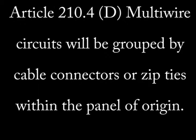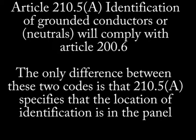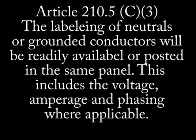Section 210.4 paragraph D: multi-wire circuits will be grouped by cable or zip ties within the panel. Article 210.5 paragraph A: identification of grounded conductors or neutrals will comply with Article 200.6 — we're going back to the color code for neutrals. Article 210.5 paragraph C, subsection 3: the labeling of grounded conductors will be readily available or permanently posted in the same panel.